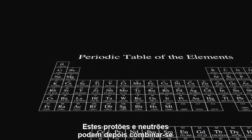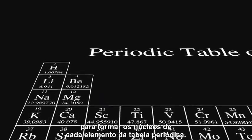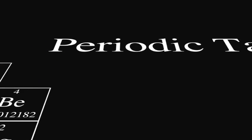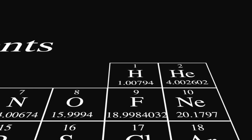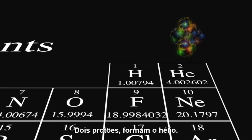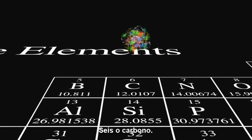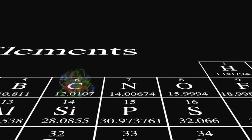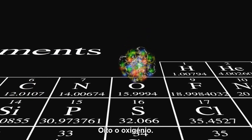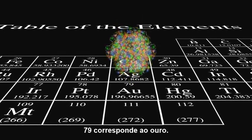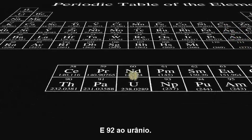These protons and neutrons can then combine to form the nucleus of each element in the periodic table. One proton in the nucleus makes hydrogen. Two form helium. Six, carbon. Eight, oxygen. Seventy-nine is gold. And ninety-two, uranium.